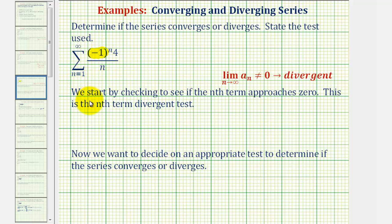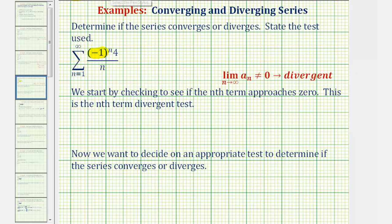Let's start by checking to see if the nth term approaches zero, which is the nth term divergence test. This test tells us that if the limit as n approaches infinity of a sub n doesn't equal zero, we can quickly conclude that the infinite series is divergent. When considering an alternating series, a sub n is the non-alternating part, so for our infinite series, a sub n will be four divided by n.